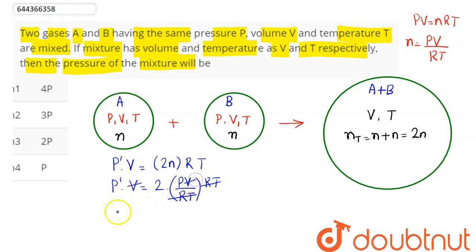Hence P' comes out here as 2P. So we can say here pressure becomes double of the individual pressures. So here option number three is the correct answer, that is total pressure will become 2P, which is our answer.